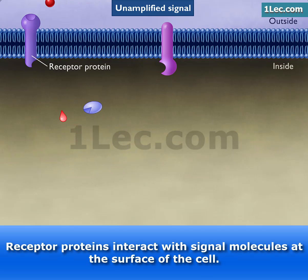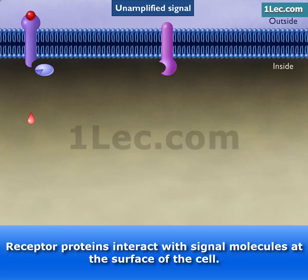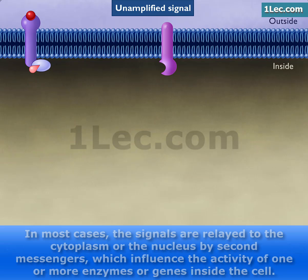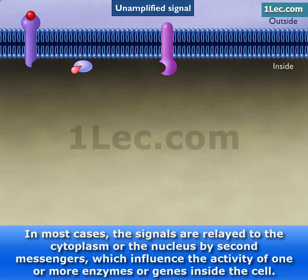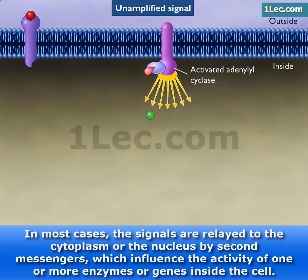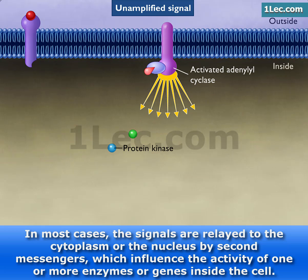Receptor proteins interact with signal molecules at the surface of the cell. In most cases, the signals are relayed to the cytoplasm or the nucleus by second messengers, which influence the activity of one or more enzymes or genes inside the cell.